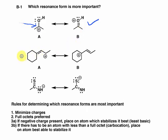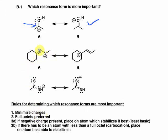What about the second example? Going down our list: minimization of charge — A has a single positive charge, B has a single positive charge, so there's no difference. What about full octets? Are there any atoms on A with less than a full octet? Yes, we have a carbocation, but in B we also have a carbocation with less than a full octet. So again there's no way to differentiate between these two on those criteria.